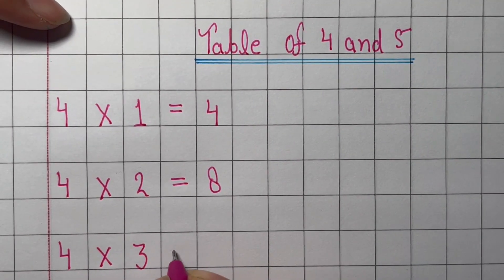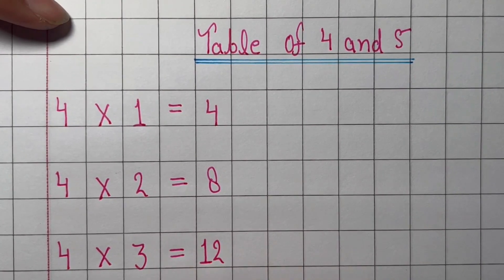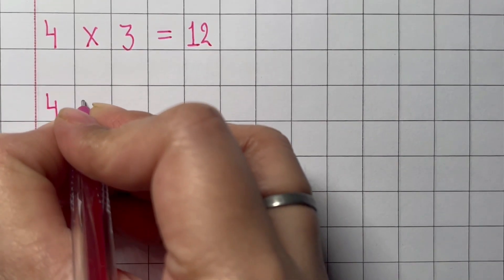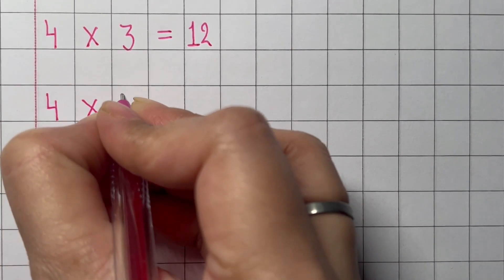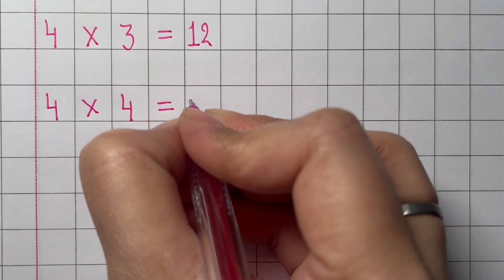Three times 4 equals 12. Four times 4 equals 16.